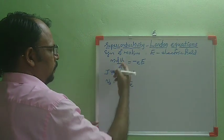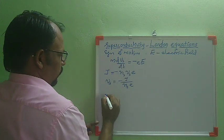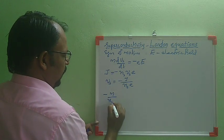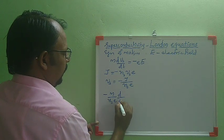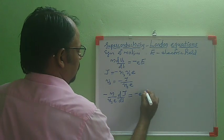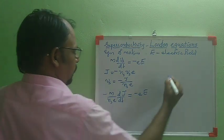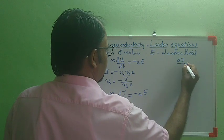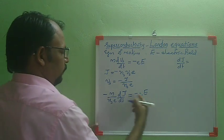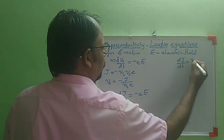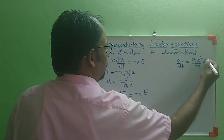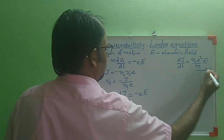Substituting this value into the equation of motion, it becomes -M/(Nse) · d/dt(J) = -eE. Taking the constants outside, we get M/(Nse) · dJ/dt = eE. From that, dJ/dt = Nse²/M · E. This is equation 1.